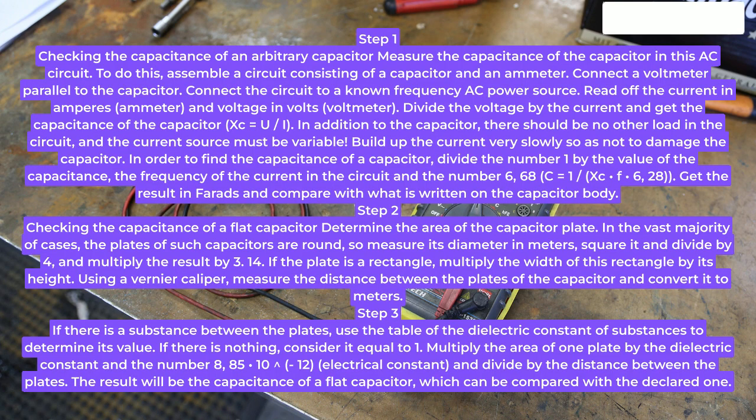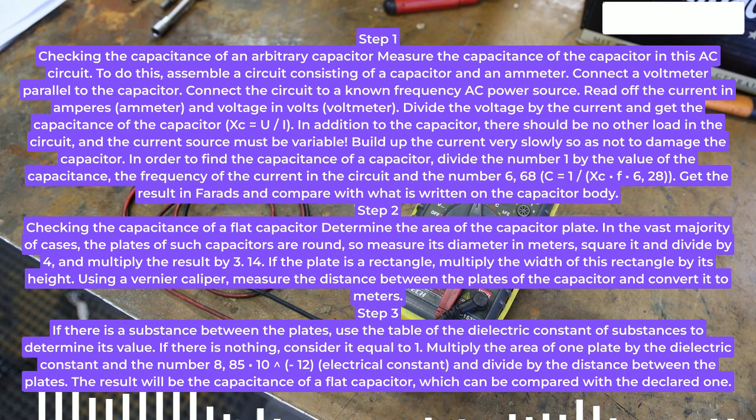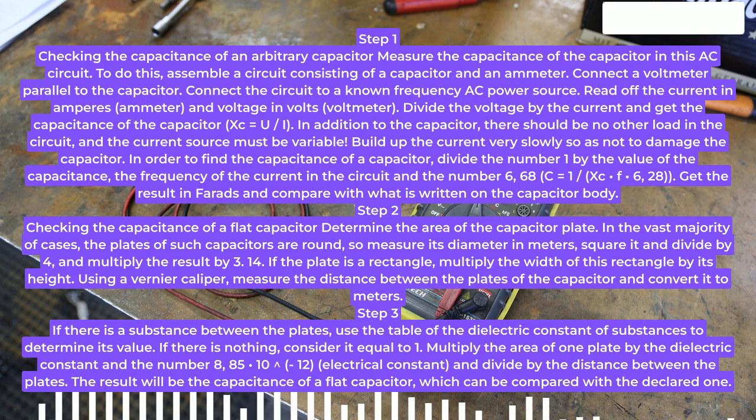Step 1. Checking the capacitance of an arbitrary capacitor, measure the capacitance of the capacitor in this AC circuit. To do this, assemble a circuit consisting of a capacitor and an ammeter. Connect a voltmeter parallel to the capacitor. Connect the circuit to a known frequency AC power source.